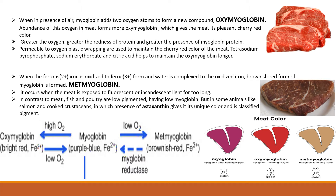Metmyoglobin is considered to be a less desirable color that results from oxidation of the iron atom to the ferric state and complexing of a molecule of water. Metmyoglobin can be reduced back to myoglobin. Depending on the environment, myoglobin pigments may be converted between oxymyoglobin, myoglobin, and metmyoglobin. The scheme on the screen shows how these three forms can be reversibly converted.